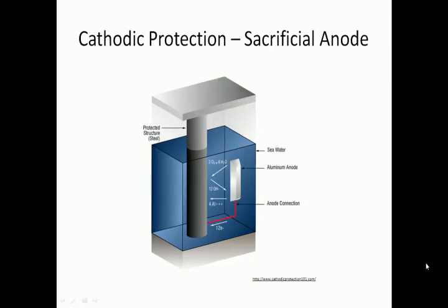Another way that cathodic protection is used is by using sacrificial anodes. A sacrificial anode is a bar or block of material that corrodes more readily than steel. The most common materials used in sacrificial anodes are aluminum, zinc, and magnesium. The more active metals corrode more easily and thus protect the steel from corrosion. As the name implies, the anodes are sacrificed and must be replaced when roughly 80% of the material has been consumed.